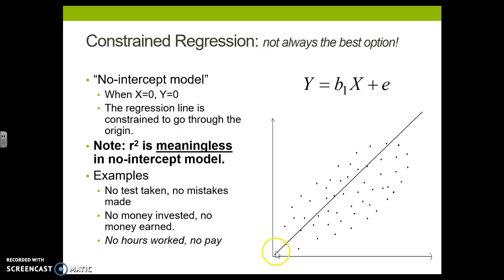Or hours worked and no pay. So if I don't work any hours, then I don't get paid. What about vacation days though? Then I'm not working and I'm still getting paid. Or sick days. So this is not always the best option. You want to have a really strong rationale if you're going to constrain a regression.